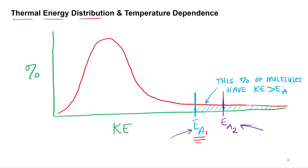So which one has more molecules that have enough kinetic energy — the first or the second? The first one. The first activation energy has all of these molecules, whereas the second one, because it has a higher activation energy, only the molecules past the purple line have enough kinetic energy to overcome the activation energy.